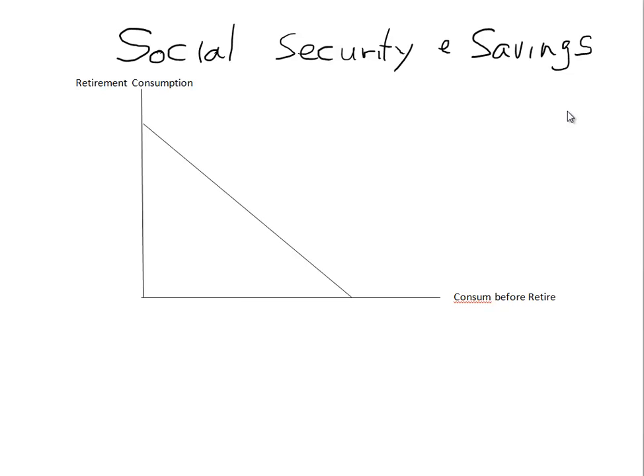Hello, let's talk about Social Security and Savings using a two-time-period model. In this model, we're going to have your consumption before retirement on the horizontal axis, your retirement consumption on the vertical axis, so you have your life before retirement and your life after retirement.